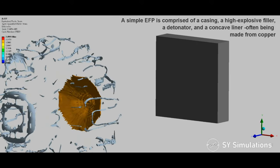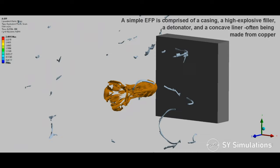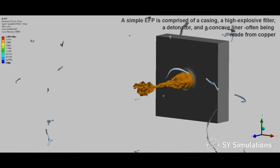A simple EFP is comprised of a casing, a high explosive filler, a detonator, and a concave liner often being made of copper.